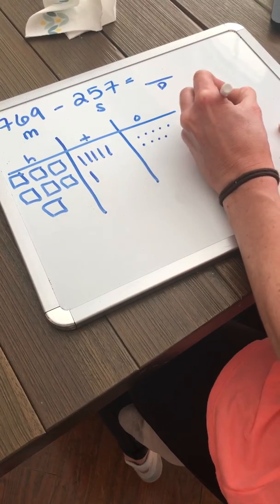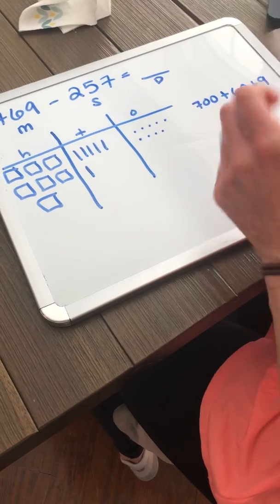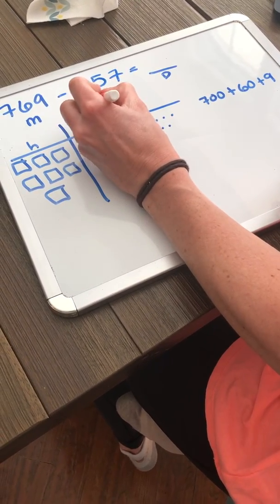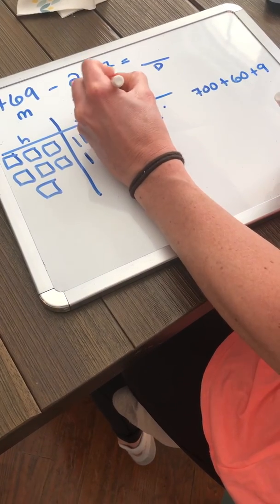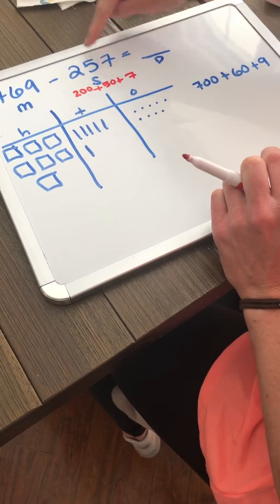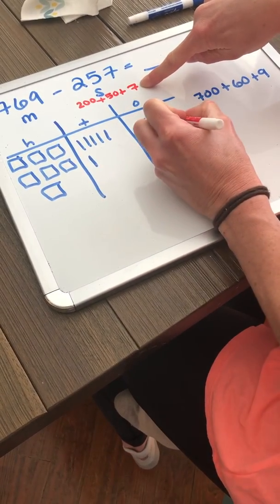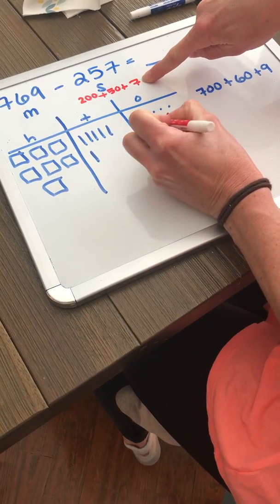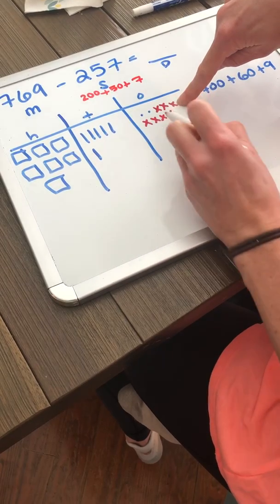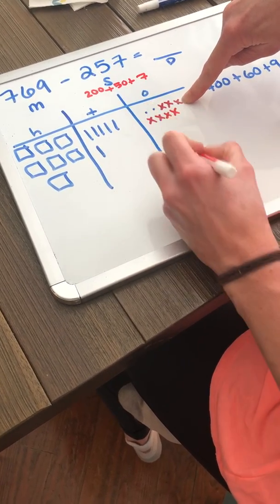I just represented 769. I want to take away my subtrahend, so I'm taking away 257. I expanded 257. So let's start with my ones. I'm going to take away seven ones: 1, 2, 3, 4, 5, 6, 7. Remember those X's mean that they're taken away, which is what subtraction means: taking away or comparing. I'm left with two ones.